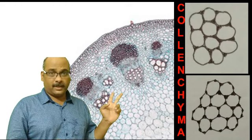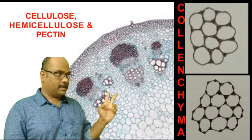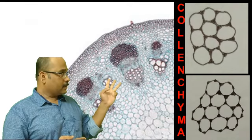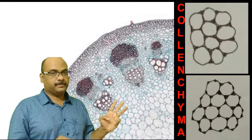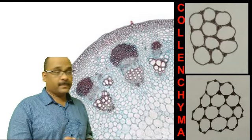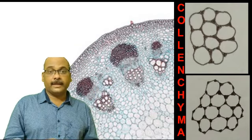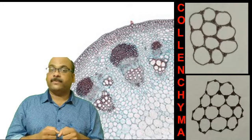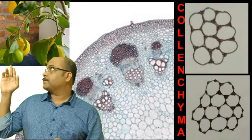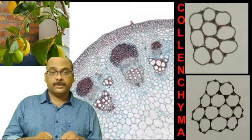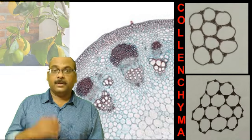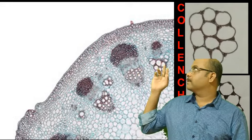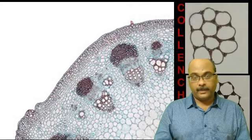Second one. What is their cell wall made of? Pectin is there. At the same time, cellulose and hemicellulose is also there. Are there intercellular spaces? No intercellular spaces. Now what is the function? Here due to the deposition of pectin, they give flexibility to the branches of the stem. For example, they are seen in citrus plants. And they give flexibility to the branches. Now where are they seen? As I mentioned earlier, they are seen just below the epidermis in the form of patches.